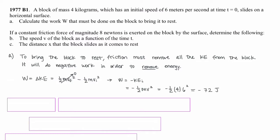If a constant friction force of magnitude 8 newtons is exerted on the block by the surface, determine the following. Part B: the speed v of the block as a function of time t. To solve for v as a function of t, we'll use a kinematics equation.